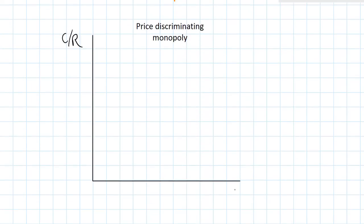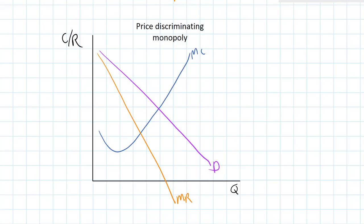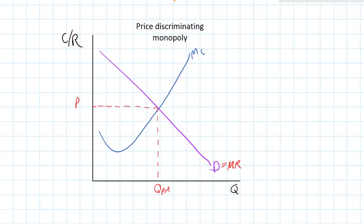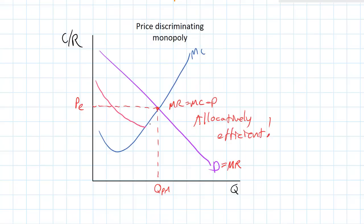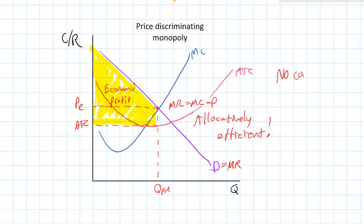A perfectly price-discriminating monopolist charges each consumer exactly what he or she is willing to pay; therefore, the demand curve equals the marginal revenue curve. The firm produces at the profit-maximizing level of output where marginal cost equals marginal revenue, which happens to be the socially optimal or allocatively efficient level of output. There is zero consumer surplus, but overall there's an increase in welfare and the market becomes allocatively efficient. What used to be consumer surplus is now firm revenue. The yellow area represents total profits for the price-discriminating monopolist, and there's an increase in total surplus.